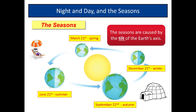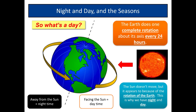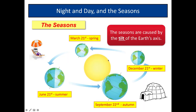So we now know what a year is and what a day is. What about seasons? Seasons are climatic changes, and they are caused by the tilt of the Earth's axis. Notice the Earth isn't exactly upright — it doesn't spin on an axis that is completely upright, but is in fact tilted.